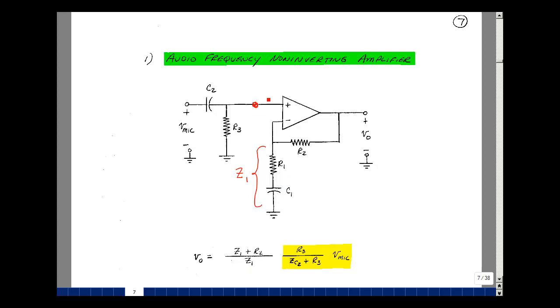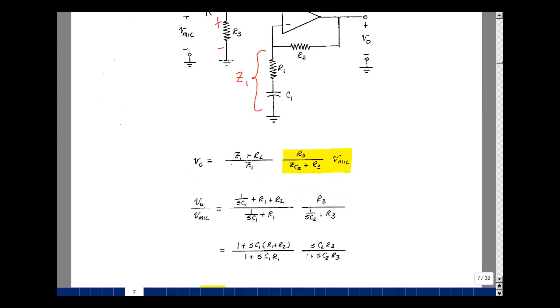Whatever voltage is present here, the output voltage is going to be 1 plus R2 over the impedance of Z1 times this voltage. You could also write that as Z1 plus R2 divided by Z1. What's this voltage? Because this current is very small, it's got a voltage divider with V microphone. That's going to be R3 over the impedance of the capacitor C2 plus R3 times the V microphone. Now let's put the values of the impedances in.